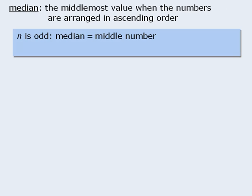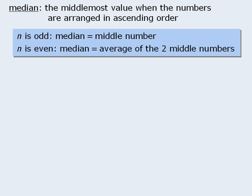When n, the number of values, is odd, then the median is the middle value once the numbers are arranged in ascending order. When there is an even number of values, the median is the average of the two middle values.